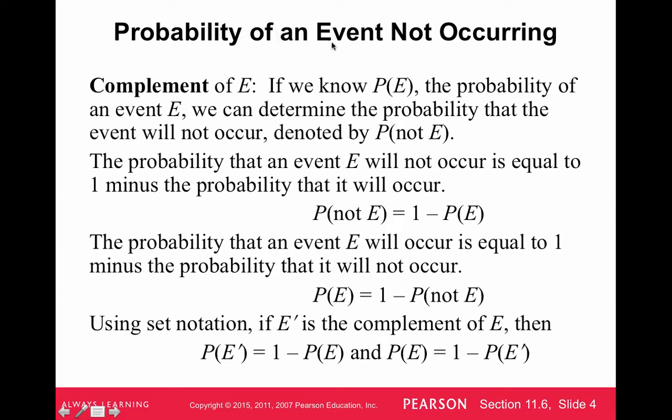So we're going to start with the probability of an event not occurring. We call this the complement of an event. If we have an event, and we want to know the probability that it will not occur, we're finding the probability of its complement. If we know P of E, the probability of event E, then we can determine the probability that the event will not occur, denoted by P not E. The probability of an event E will not occur is equal to 1 minus the probability that it will occur.